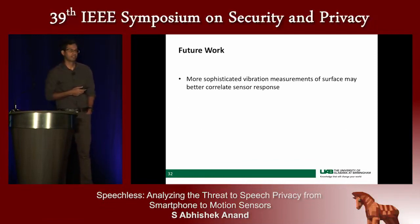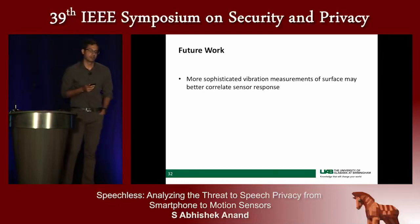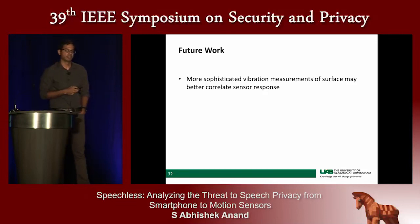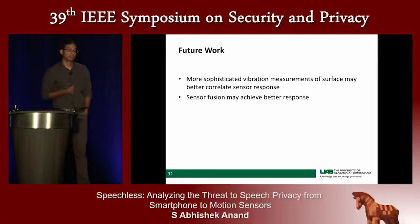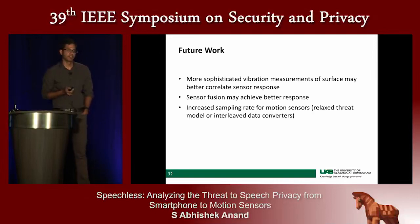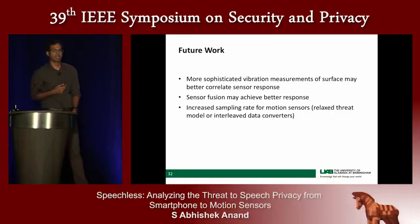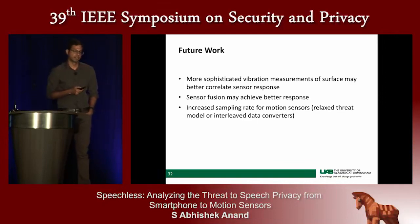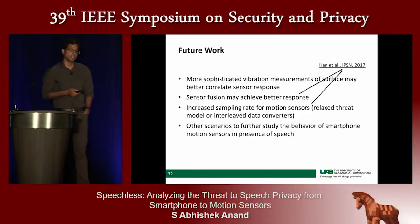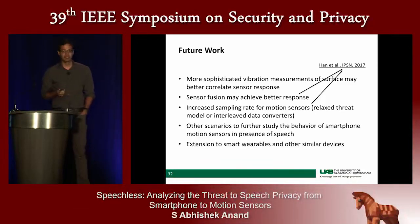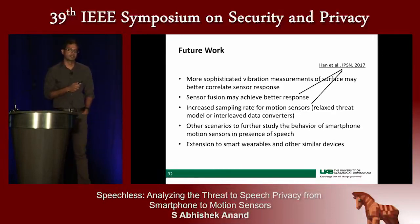In future work, we can look toward measuring surface vibrations using devices such as a laser Doppler vibrometer to correlate those vibrations with the sensor response we observe. Sensor fusion may achieve a better response, and increased sampling rate — obtainable in a relaxed threat model where the attacker can override the operating system limit — is also promising. One such work has already been done using embedded motion sensors with higher sampling rates and sensor fusion to reconstruct speech. We could also extend this work beyond smartphones to smart devices and smart wearables.